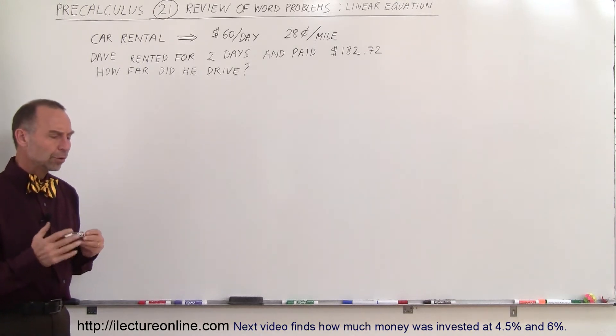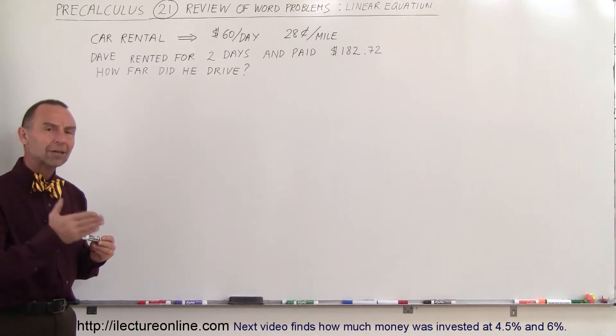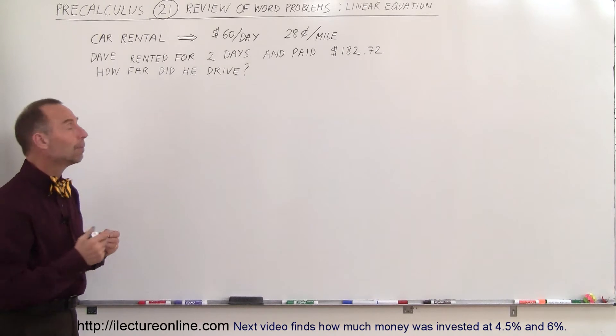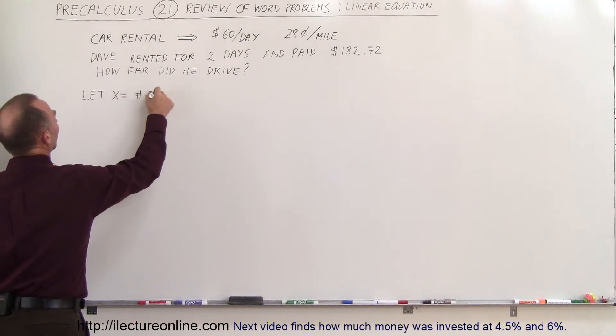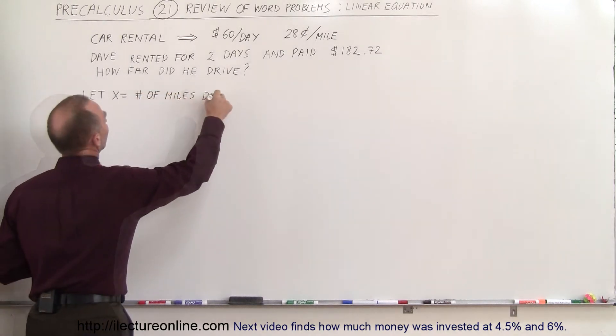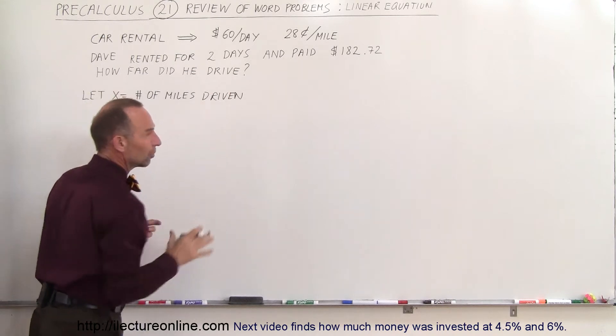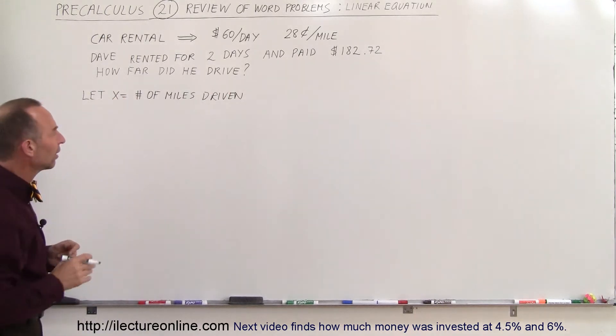Well, the way you want to do that is first you're going to let X represent the unknown, the number of miles driven. So let X equal the number of miles driven. And it really is important that you write that down so it's clear what X represents.